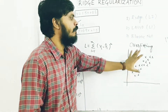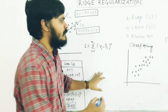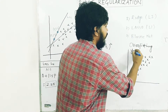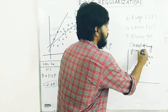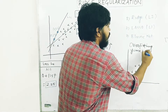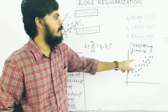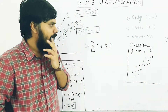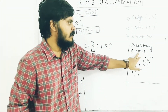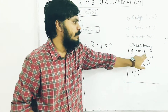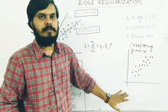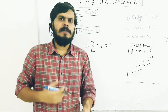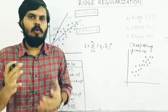Now we will see what overfitting means specifically in the linear regression case. The whole idea of linear regression is to find the best fit line: y = mx + b, where m is the slope and b is the y-intercept.